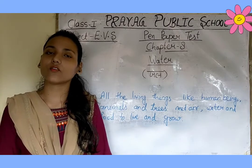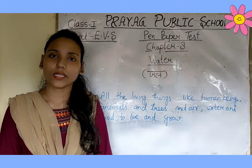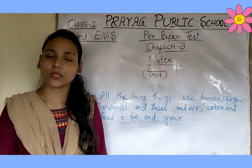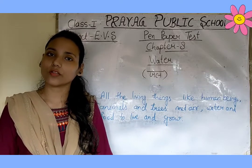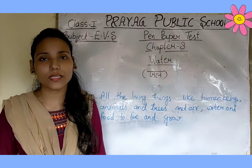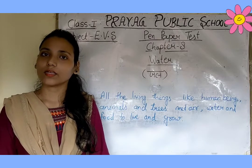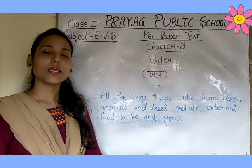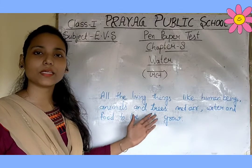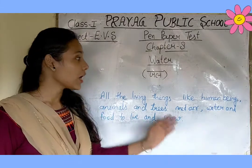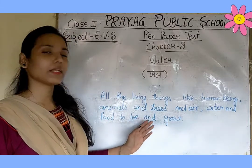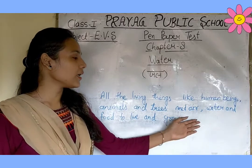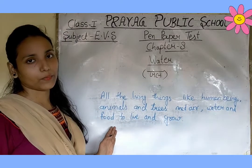Without food, air and water, we cannot survive. बिना भोजन, वायु और जल के हम जीवित नहीं रह सकते। तो हमें जीवित रहने के लिए और grow करने के लिए इन सभी की आवश्यकता होती है — air, water and food के बिना।